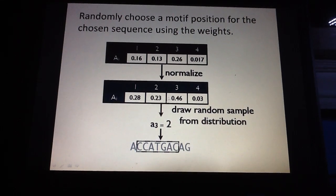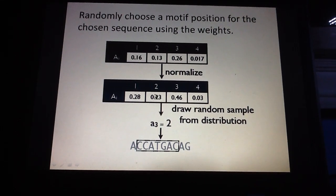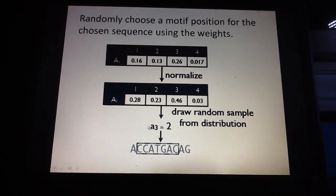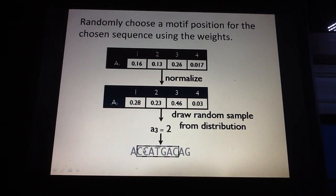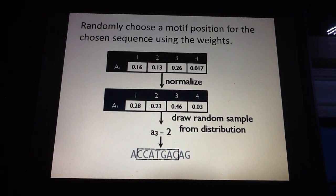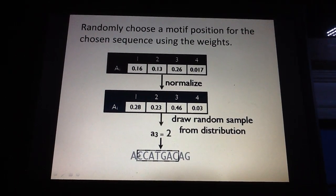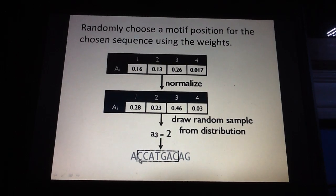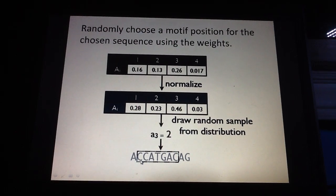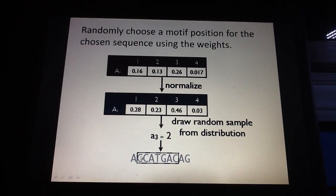Now we continue our discussion. This is the fourth part of a series of discussions. In the third part, we chose the second position as the new motif starting position for the first sequence, and the second position was randomly sampled to be the first position for our motif.